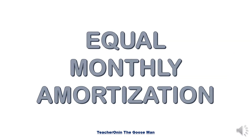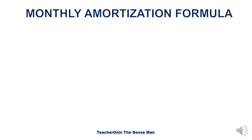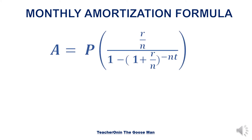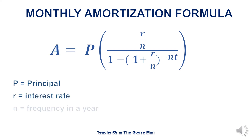Sometimes annual amortization is quite long, so businesses opt for monthly amortization for two reasons: first, lower monthly payment; and second, faster repayment. The formula for monthly amortization is almost the same as the annual formula, except that the rate is divided by the frequency in a year (N). So we have: P is the principal, R is the interest rate, N is the frequency in a year, and T is the time.